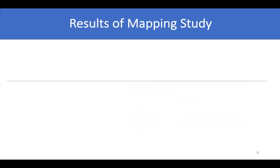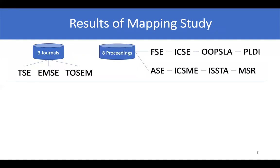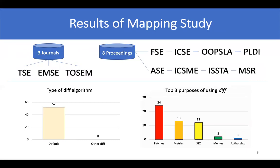For the systematic mapping, we collected from three high-ranking journals and eight top international conference proceedings published from 2013 to 2017. Out of 3,057 papers, we mapped 52 selected papers to understand which diff algorithm is used in previous studies and the purpose of mining git repositories. The results revealed that all collected papers had never considered other advanced diff algorithms. We also found that the purposes of using the git command were to get patches, followed by metric collection, and bug-introducing identification using the SZZ algorithm.